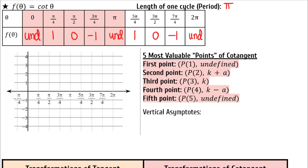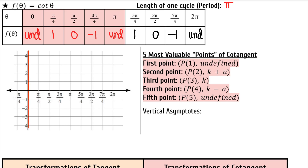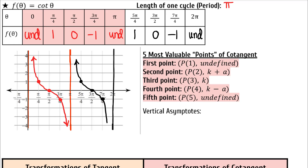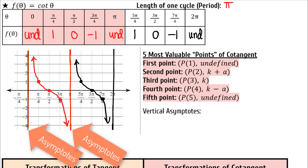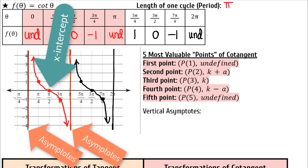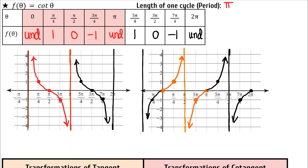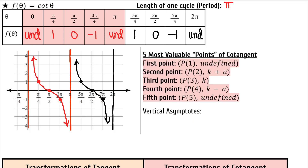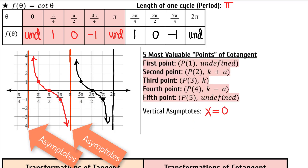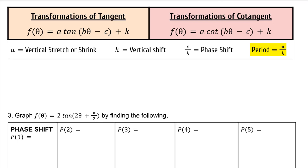Now find the reciprocal of the tangent values to fill out the table for cotangent. Cotangent has the same period as its reciprocal function tangent. Graph cotangent. The five MVPs for cotangent include two vertical asymptotes at P1 and P5 and an x-intercept directly in between. Notice that the curves of tangent are steadily increasing, and the curves for cotangent are steadily decreasing. The transformations of tangent and cotangent look just like sine and cosine with a, b, c, and k.